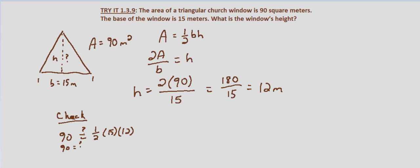So does this equal 15 times 6. And 90 does indeed equal 90. So that checks. So the height is 12 meters.